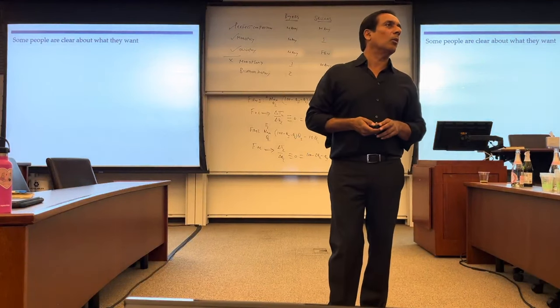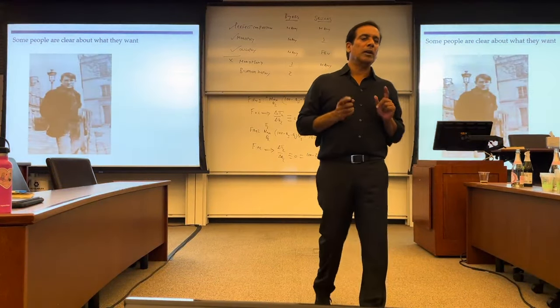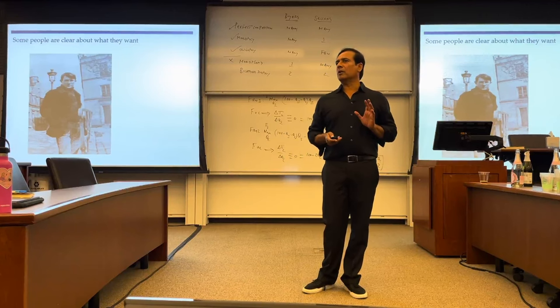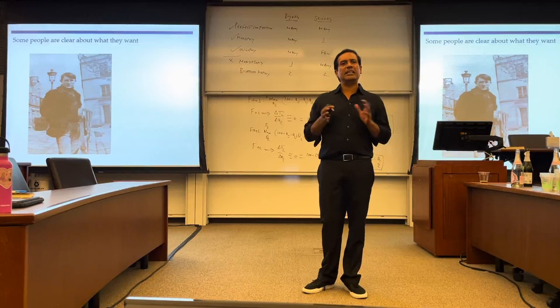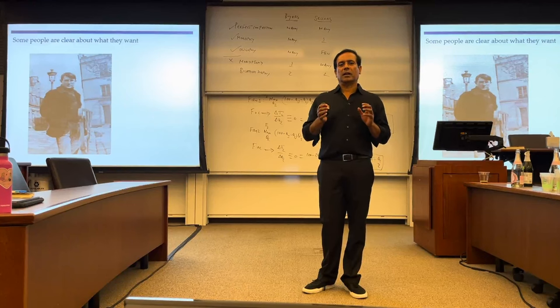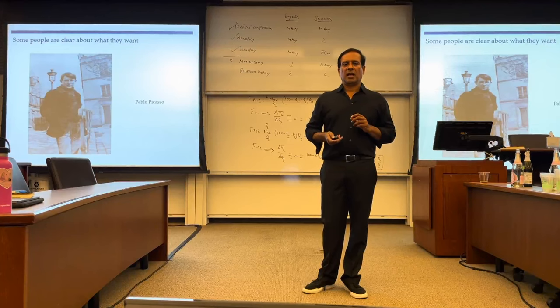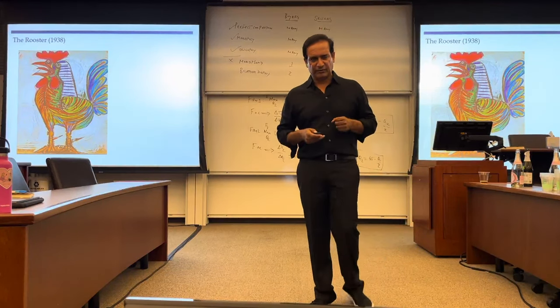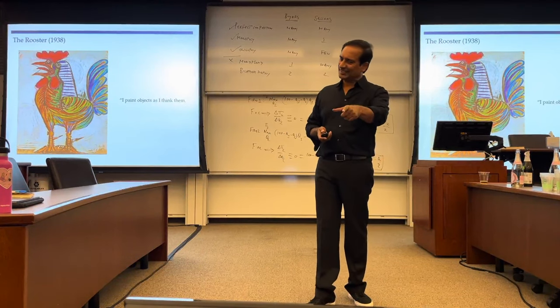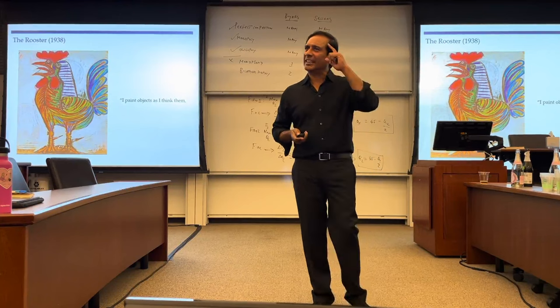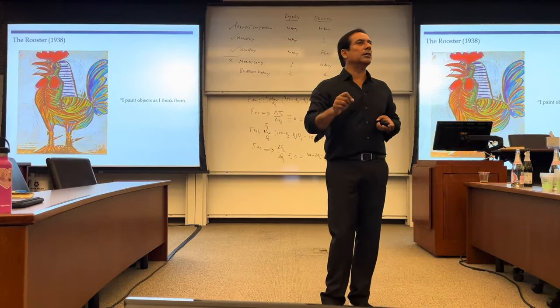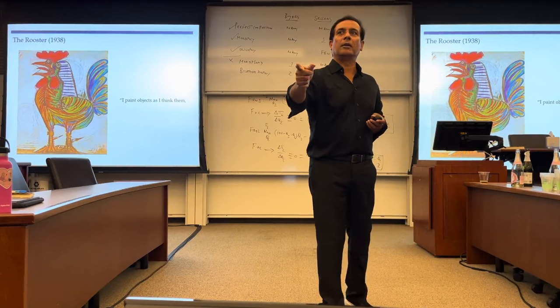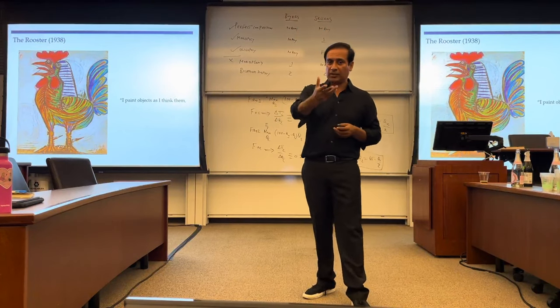Some people are very clear about what they want. I'm going to give you two models. One model is this guy. Extensively studied. Pablo Picasso. His model of doing things. And over the course of his life, he had many different phases. And in one phase, he describes his philosophy of creating art. This was from 1938. This is his painting called The Rooster where he says, I paint objects as I think them, not see them. So this is a model in which a person says, I'm going to do this. I imagine it in my head and I do it. So this is one model. This is the genius model, obviously, if you can pull it off.